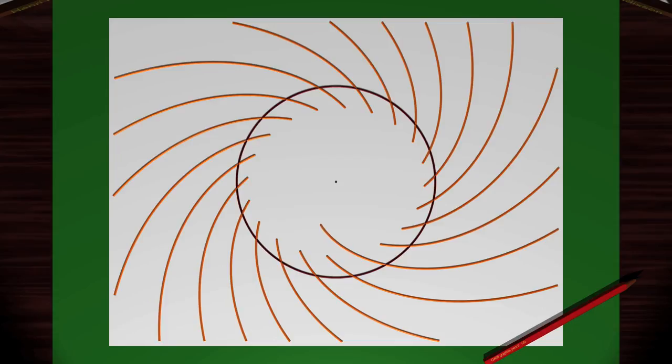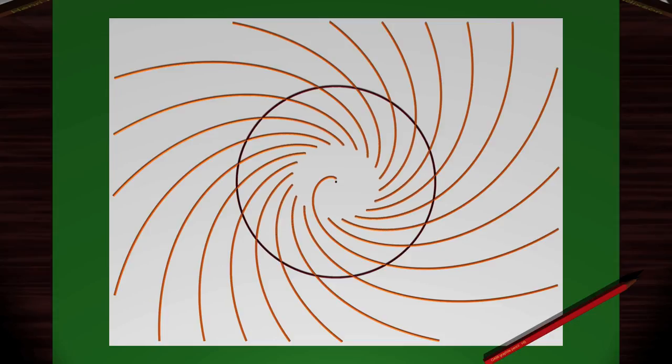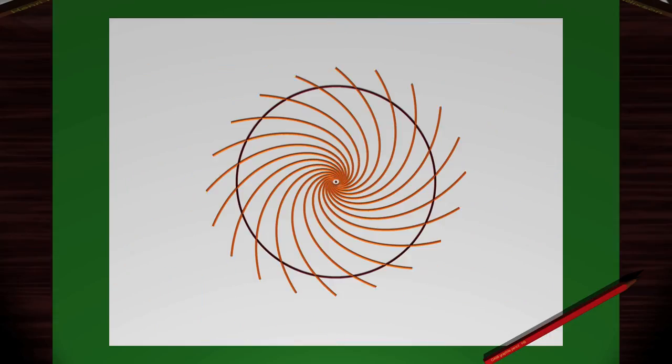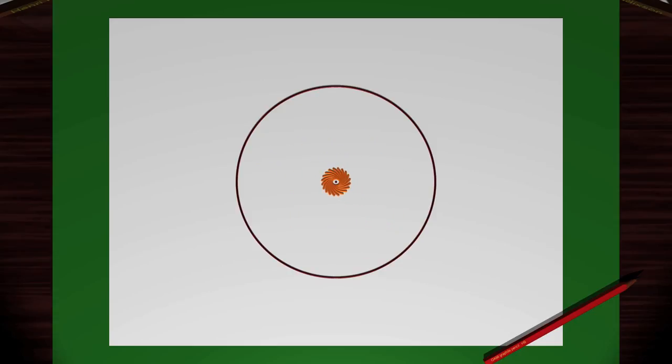Well, the Poincaré-Bendixson theorem says there are two possible cases. The trajectory will either get very close to an equilibrium position, as we see here. This is what we saw for the damped pendulum. Or it must approach a limit cycle.